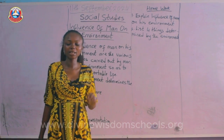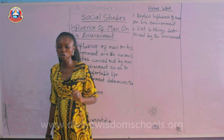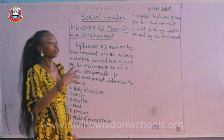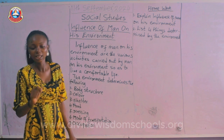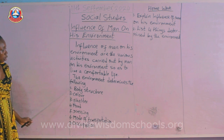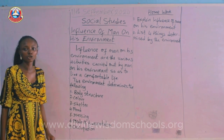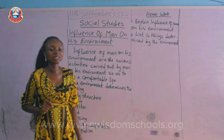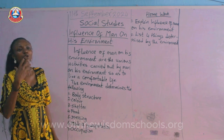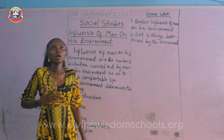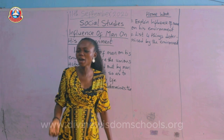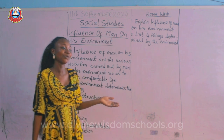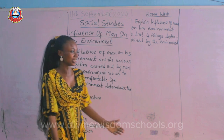Now, the environment determines certain things in the life of man. Remember, when we talk about man in social studies, we refer to human beings in general. First, let's look at body structure. The environment determines the body structure of human beings. We do not have a choice in picking the environment we are born into — none of us chose our surroundings.